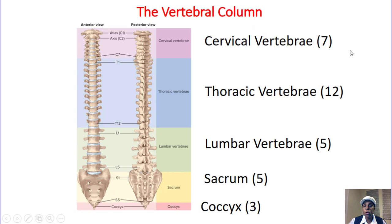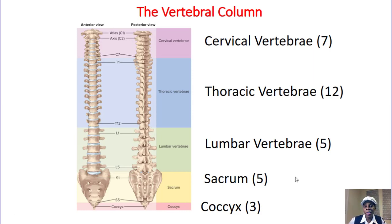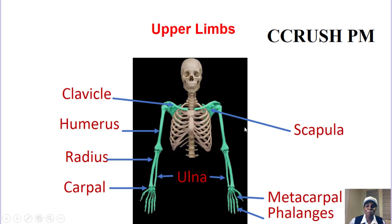And then the vertebrae. We have cervical vertebrae, thoracic vertebrae, lumbar vertebrae, then the sacrum and coccyx. The sacrum is like a sacred place, and the coccyx is the tailbone.